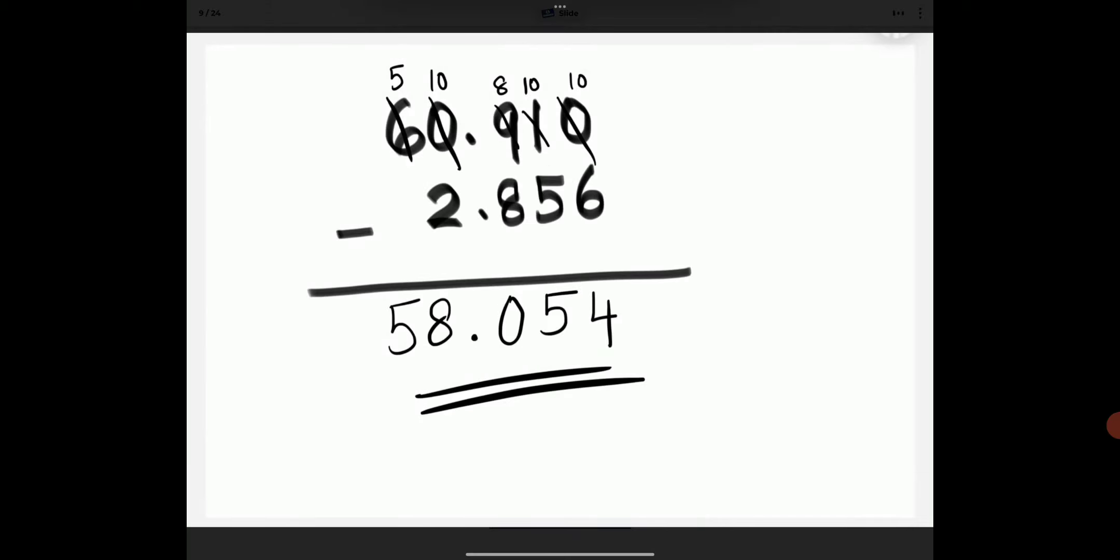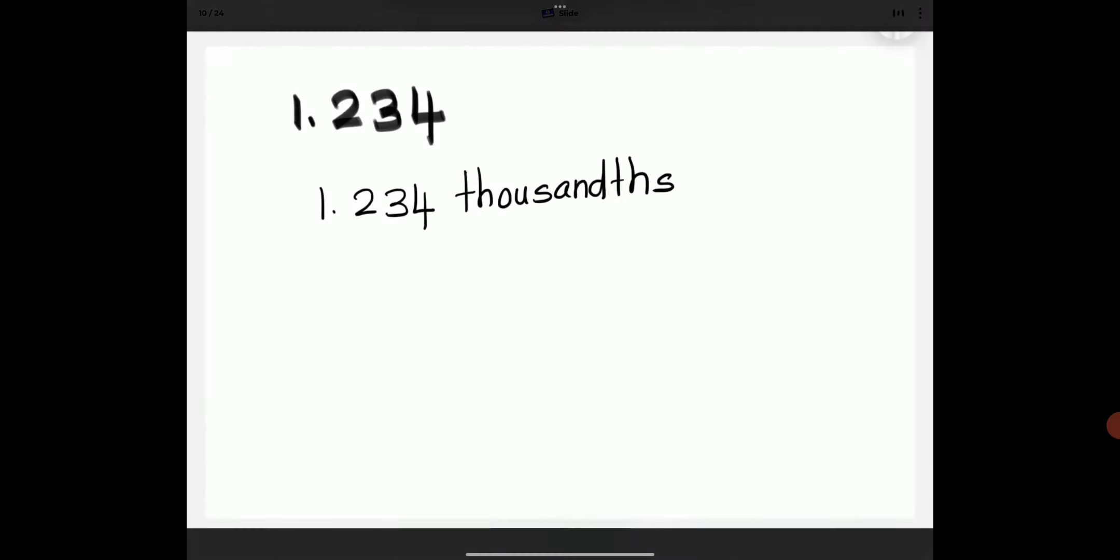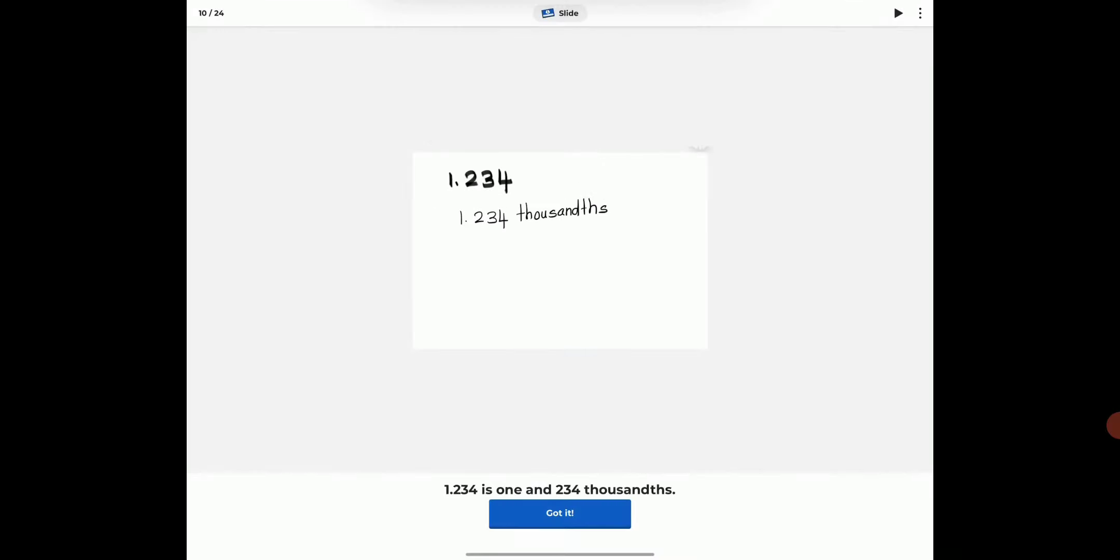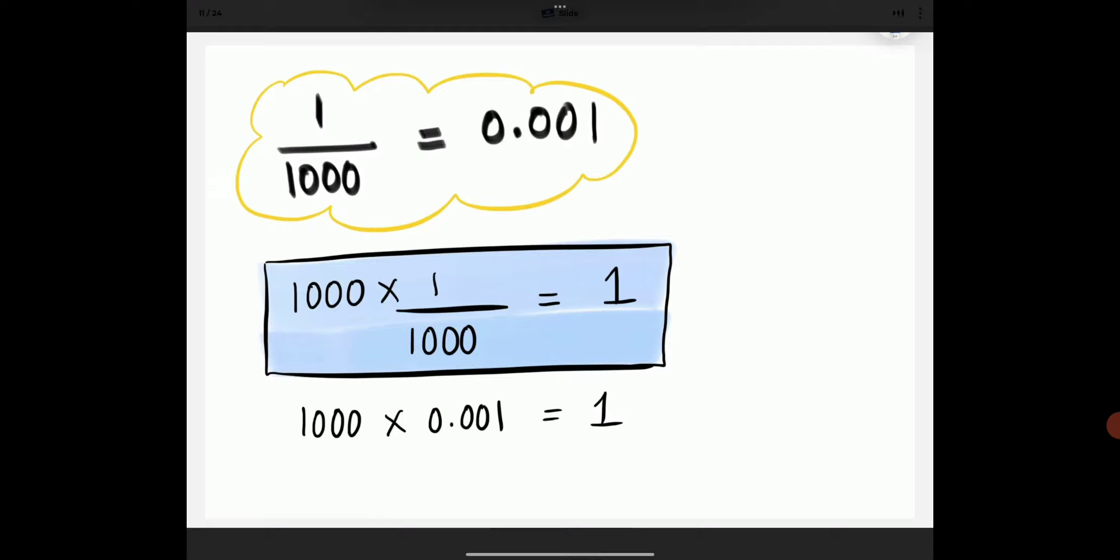Align the like units and then subtract. 1.234 is 1 and 234 thousandths. 1 thousand times 1 thousandth is 1.